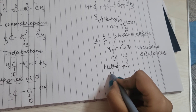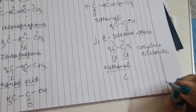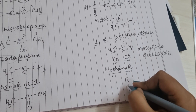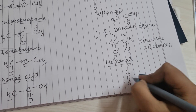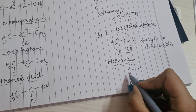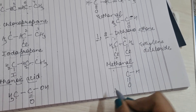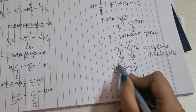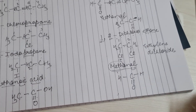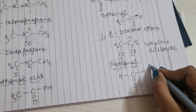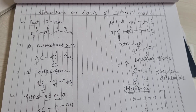Methanal: 'meth' मतलब 1 carbon, 'al' मतलब aldehyde। Aldehyde लगाओ, फिर एक hydrogen और लगाओ। यह मत देखना कि एक carbon और लगेगा — 'meth' दिया है तो बस hydrogen पूरे करो। This is the structure of methanal।